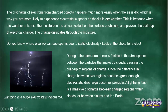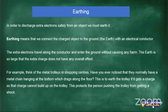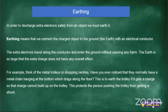To discharge extra electrons safely from an object, we must earth it. Earthing means connecting the charged object to the ground — the earth — with an electrical conductor.